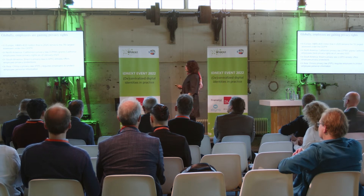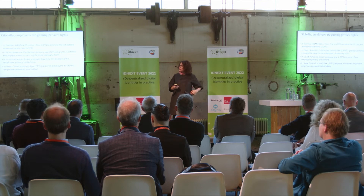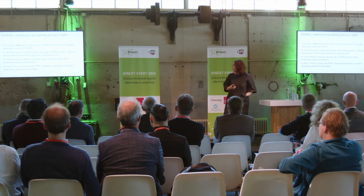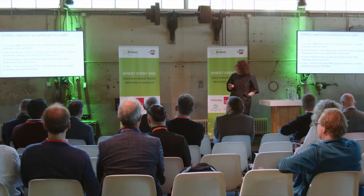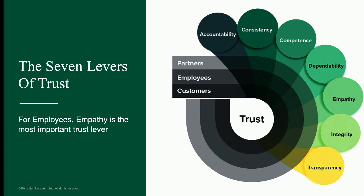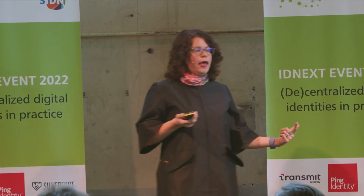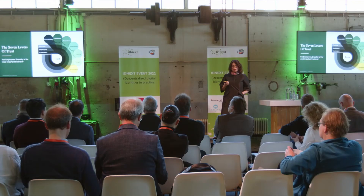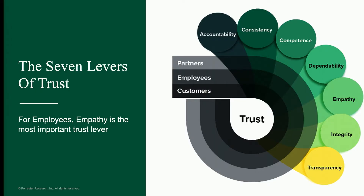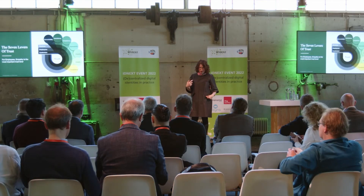Not just here in Europe where privacy rights have long been a concern, but all over the world you're starting to see not just consumer protections but employee protections as well. We've done a lot of thinking about this at Forrester and developed what we call the seven layers of trust. These apply to partners, to employees, and to customers or consumers. The various levers of trust include accountability — meaning you as an organization take responsibility for complying with the promises you make to your employees regarding how you'll use data and what protections you'll provide. You also need to be consistent, executing on those promises in a consistent way so employees can expect you to behave the same way all the time.